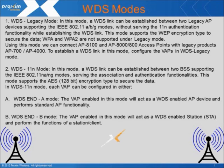The second WDDS mode is the 802.11 mode. In this mode, a WDDS link can be established between two BSS supporting the IEEE 802.11 A-NG modes, serving the association and authentication functionality. This mode supports AES 128-bit encryption to secure the data. In WDDS 11N mode, each VAP can be configured in either WDDS Endpoint A — where the VAP acts as a WDDS enabled AP device and performs standard AP functionality — or WDDS Endpoint B mode, where the VAP acts as a WDDS enabled station and performs the functions of a station/client.